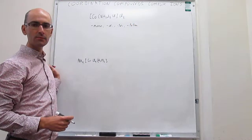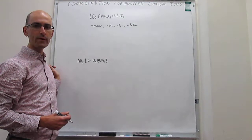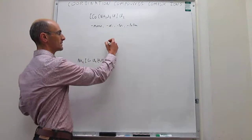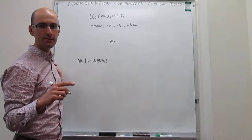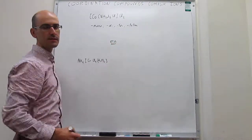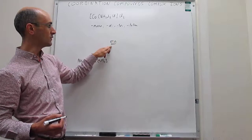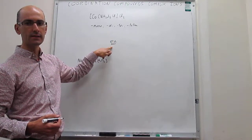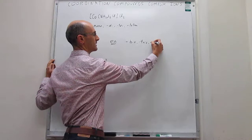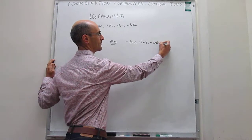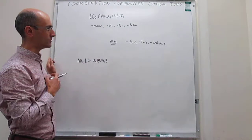An exception is when you have complex ligands that already have some of these prefixes in them. For example, the ligand EN is called ethylenediamine — the di prefix is already inside this ligand. That means you cannot use those standard prefixes in that case; instead, you use a different set: bis, tris, tetrakis, and so forth. We'll see examples where we have to use those types of prefixes.